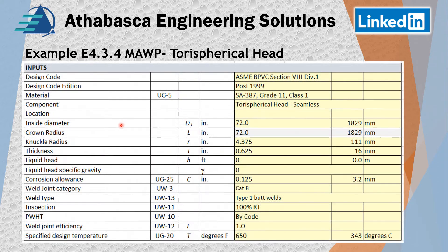Let's start with our table. We've got a very high temperature, RT, a butt weld, a category of welding or corrosion allowance, and the inside diameter — the key one is 72 inches. Therefore the crown radius needs to be the same. We have a knuckle radius and a thickness, and this is all the basic information provided by example E4.3.4.